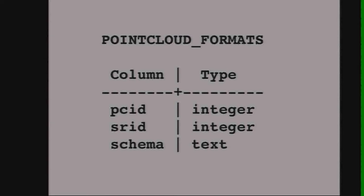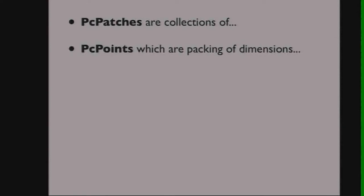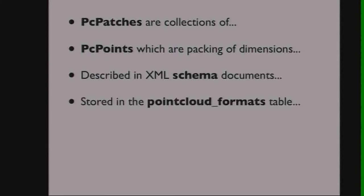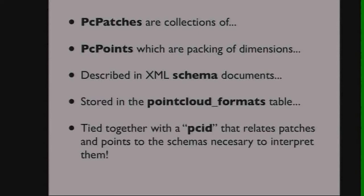Each schema document is stored in a row in the PC Point Cloud Formats table, which assigns every schema a spatial reference system and gives it a unique PCID. So to recap: we've got PC patches, which are collections of PC points, which are packings of dimensions, which are described in XML schema documents stored in a Point Cloud Formats table — all tied together with the PCID that relates patches and points to the schemas needed to interpret them.